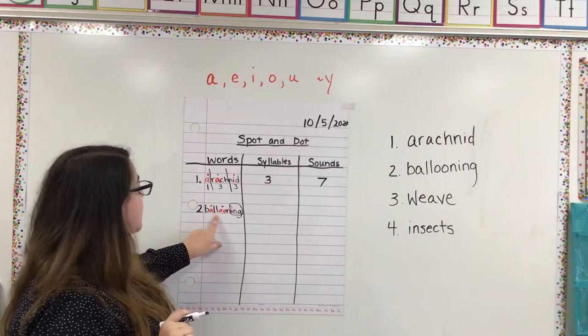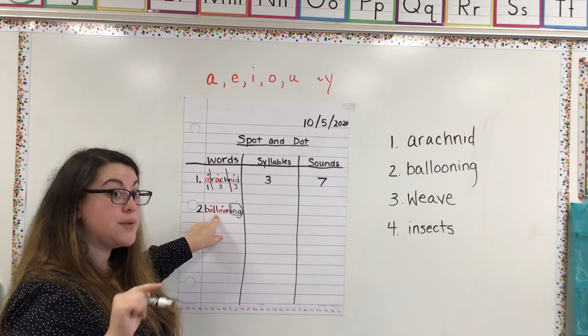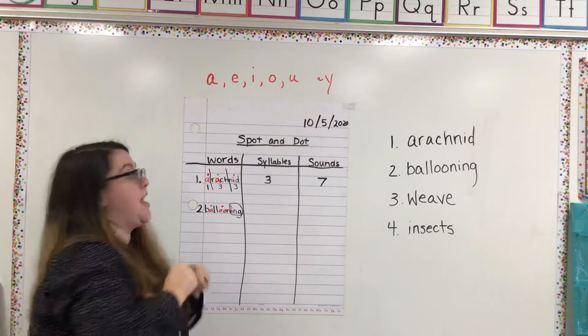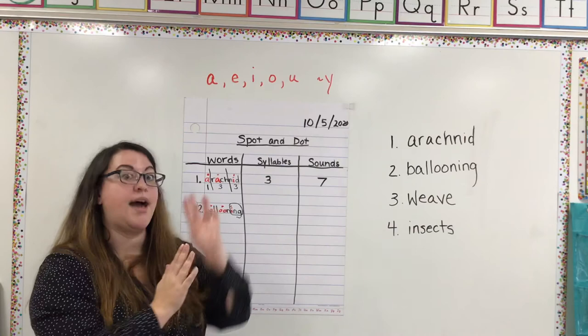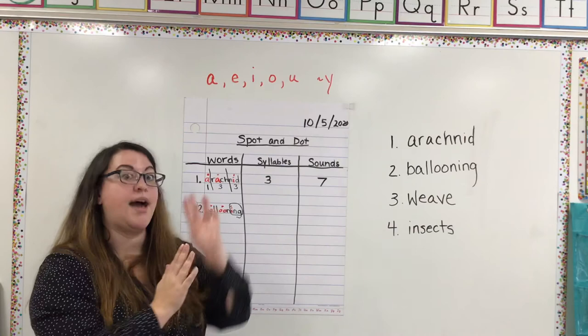And then another thing I just want you to pay attention to is we have a double consonant, right? So we have two L's working together. So first let's figure out the syllables. And then we're going to start figuring out all the sounds. So, ball-oon-ing. I counted three. So we're going to write down our syllables.